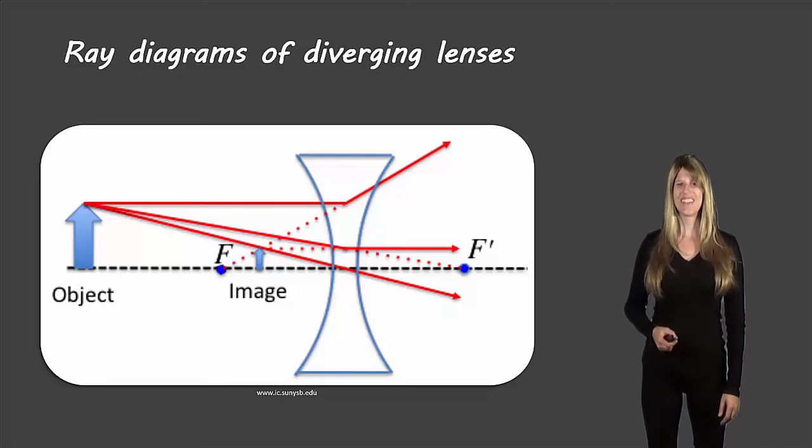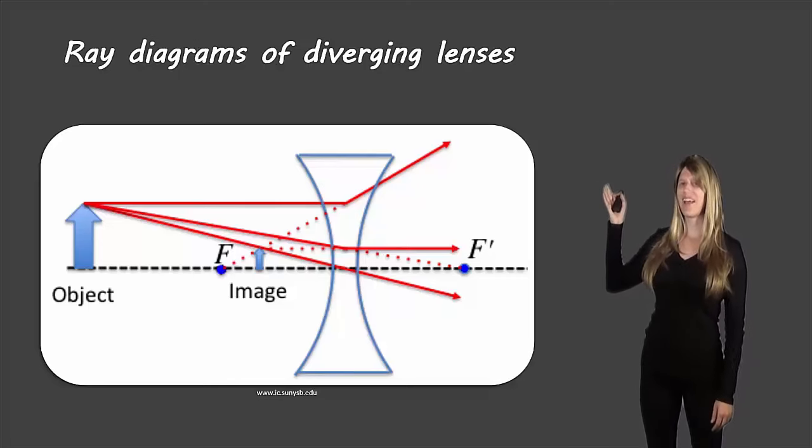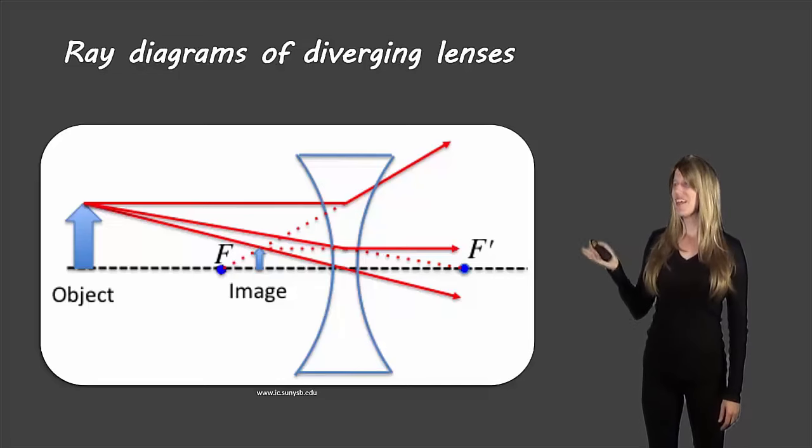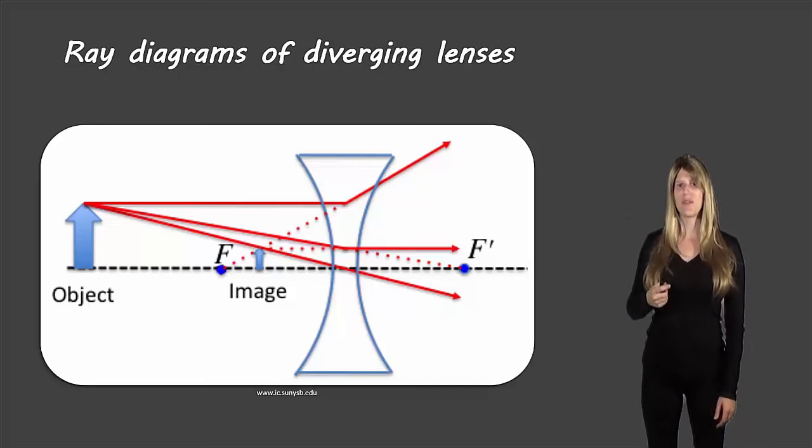Hello students, Ms. Swanson here, and today we're going to take a look at ray diagrams of diverging lenses. This picture here just shows the type of image that we'll be drawing.